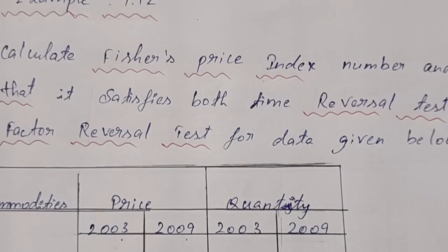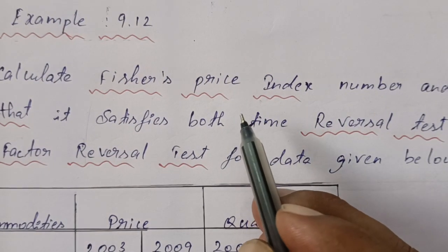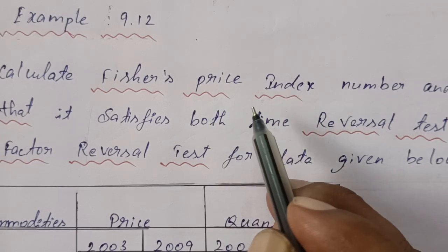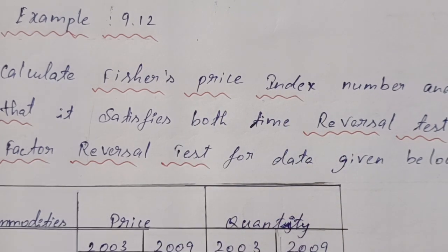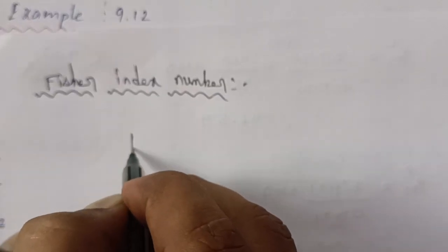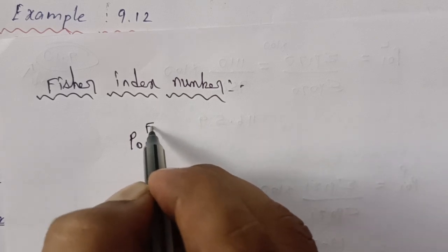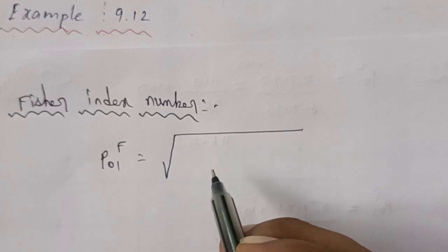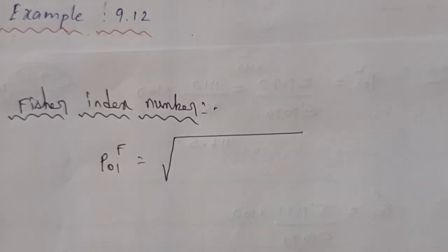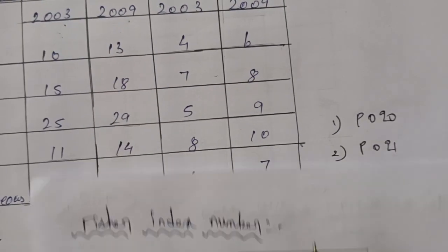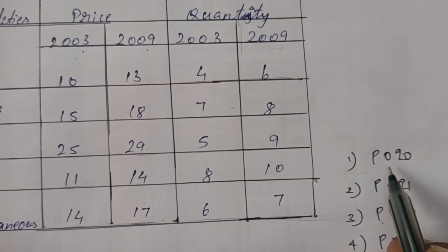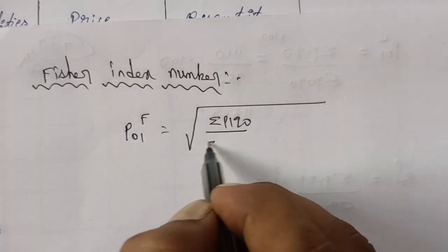Now the first question: Fisher Price Index Number. The Fisher Price Index formula is P01(F) equal to square root of (ΣP1Q0/ΣP0Q0) × (ΣP1Q1/ΣP0Q1). This is the Fisher index number formula.